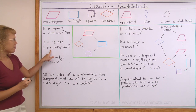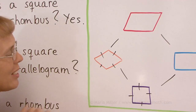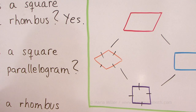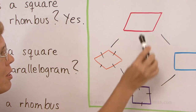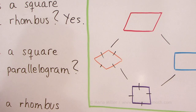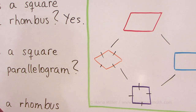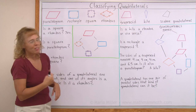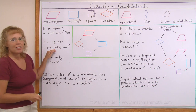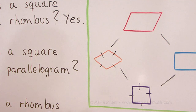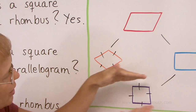Is a square a parallelogram? You can use this diagram. Does it belong to the parallelogram family? Yes it does, because it's like a grandchild in the diagram. Or you can think of the definition — in a parallelogram, the opposite sides are parallel, and that is true of the square. These sides are parallel, and these two as well.